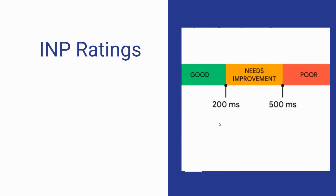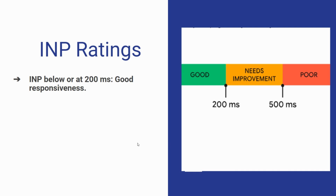To gauge INP performance, we have specific metrics. INP below or at 200 milliseconds is good. Above 200 milliseconds and below or at 500 milliseconds means some work should be done to improve it. And if INP is above 500 milliseconds, you should work on it a lot.